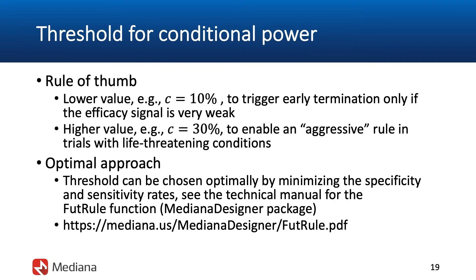These are commonly used rules of thumb across a very broad class of adaptive designs. We could consider a lower value for the conditional power threshold, for example as low as 10%, which will generally trigger early termination only if the efficacy signal is very weak. In certain types of clinical trials, including oncology trials like the case study we're considering right now, the sponsor may want to consider a higher threshold — for example 20 or 30% — which will ultimately translate into a more aggressive rule for futility assessment. One could also potentially consider a mathematically optimal approach based on specificity and sensitivity rates to choose the best threshold for conditional power at an early interim analysis.